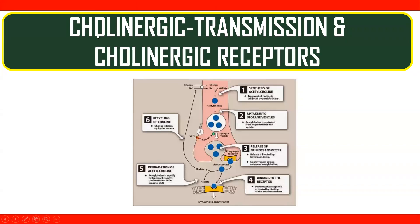Welcome everyone. Today's lecture is on cholinergic transmission and cholinergic receptors. Cholinergic transmission is the process of synaptic transmission which uses acetylcholine as a transmitter. Once acetylcholine gets released into the synaptic cleft, it binds to its receptors, and those receptors are called cholinergic receptors.